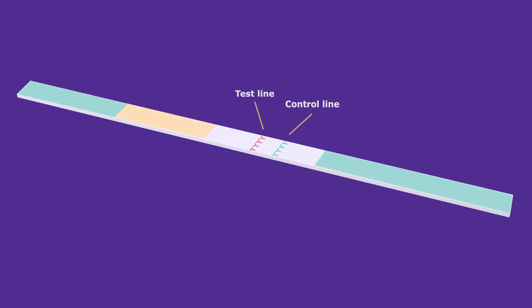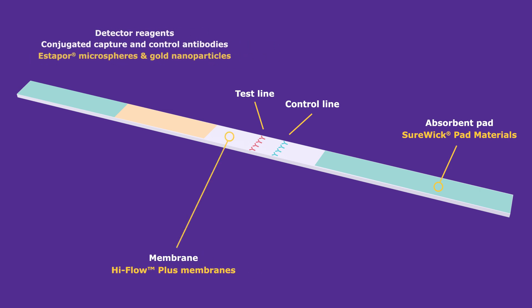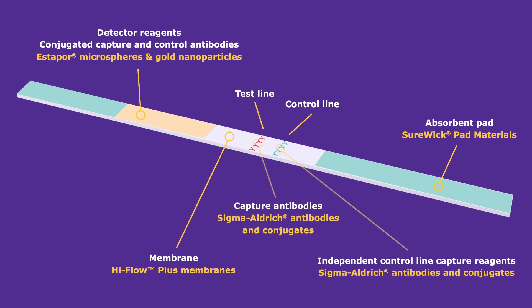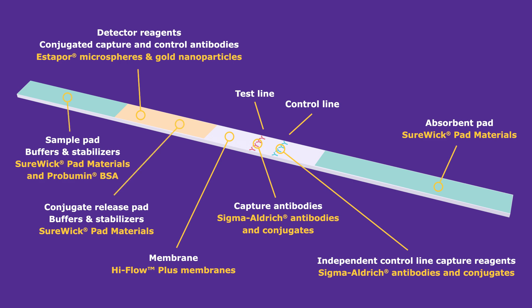The test strip within the device is composed of essential Millipore Sigma raw materials: Sherwick pad materials, high flow plus membranes, estapor microspheres and gold nanoparticles, antibodies and conjugates, buffers and stabilizers.